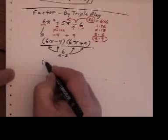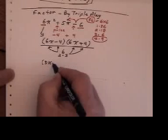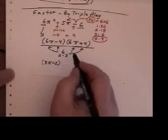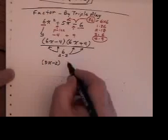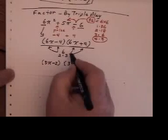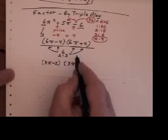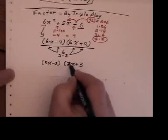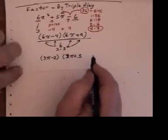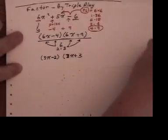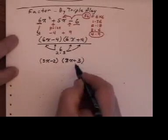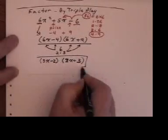2 into both of these leaves me with a 3x and a minus 2. 2 into 4, 2 into 6. 3 into both of these leaves me with a 2x plus 3. 3 into 6x is 2x, and 3 into 9 is 3. And lo and behold there is my answer.